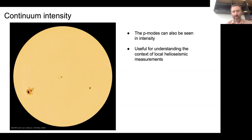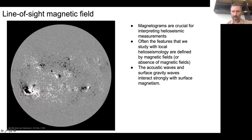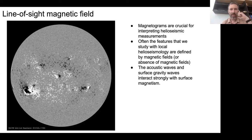There's also, from HMI, the continuum intensity. You can also use the intensity to study P modes. Most local helioseismology is done with velocity, but you can do it with intensity also. Intensity is useful for understanding the context of measurements - these little dark features are sunspots. I also wanted to show a magnetogram: an image showing the line-of-sight component of the magnetic field. Magnetograms are crucial for interpreting helioseismic measurements - it essentially doesn't make sense to do local helioseismology without knowing the magnetic context.